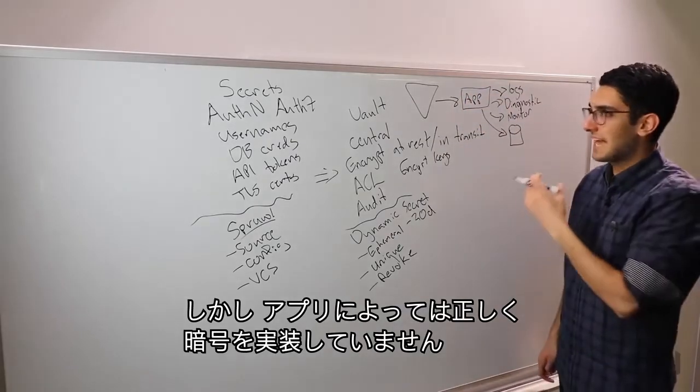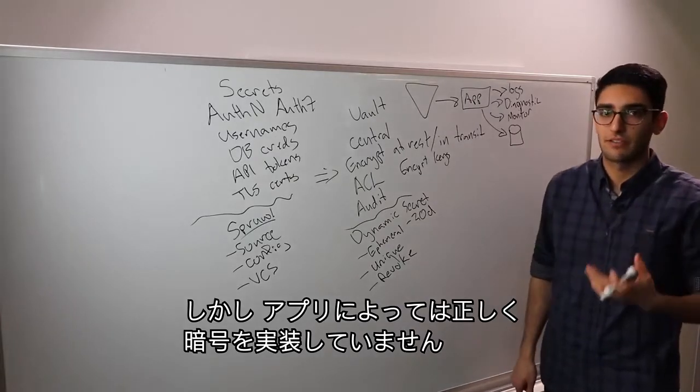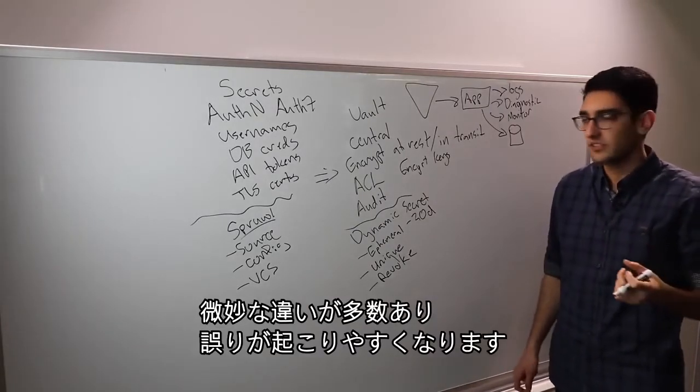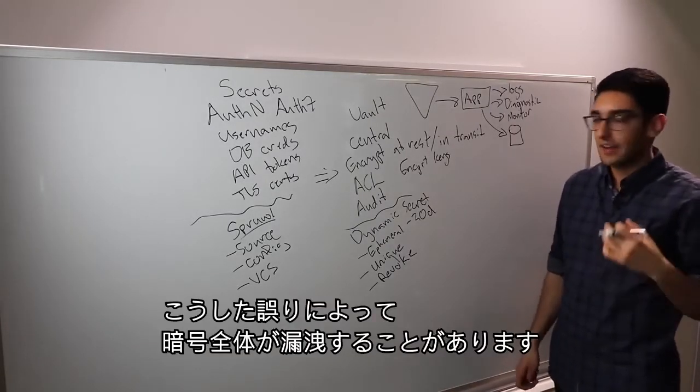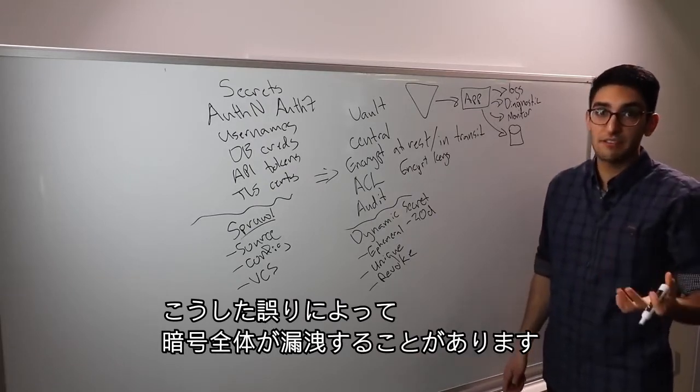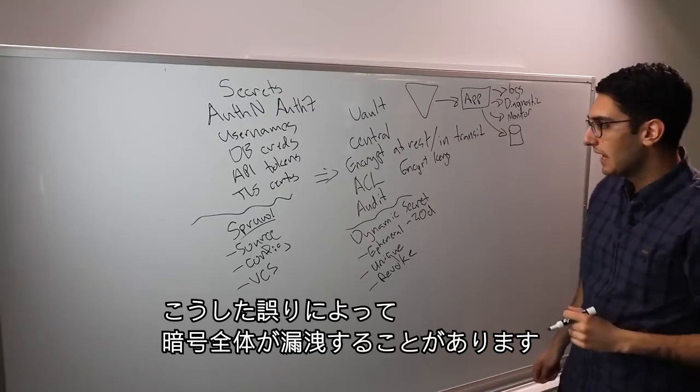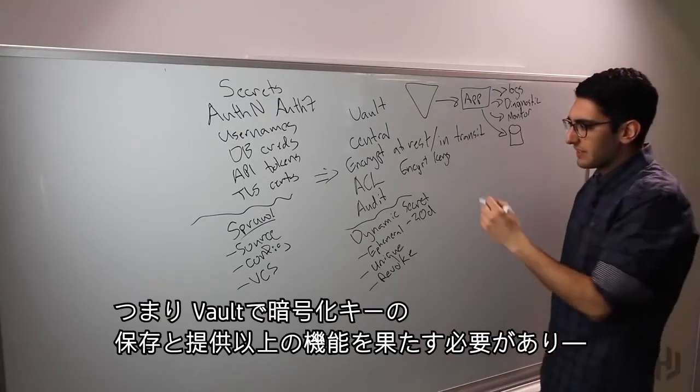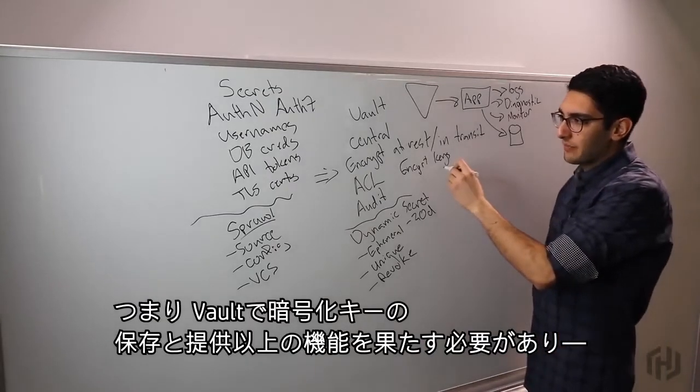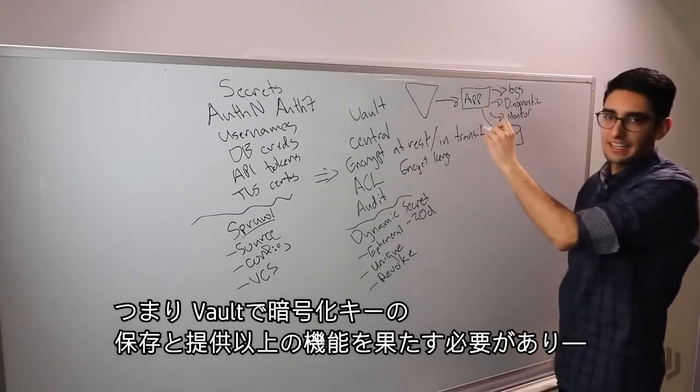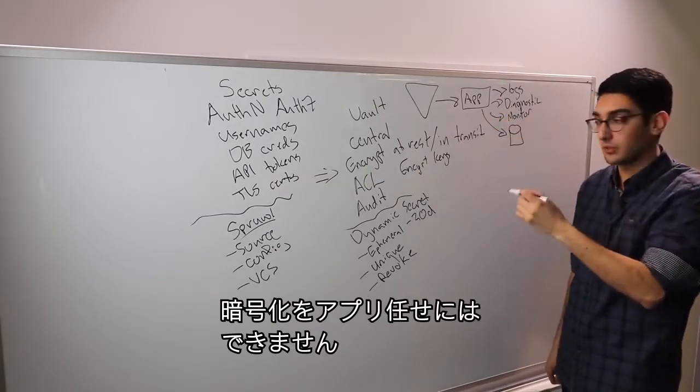What we find though is applications generally don't implement cryptography correctly. There's lots of subtle nuances and it's easy to get wrong. And with these kind of mistakes, oftentimes it compromises the whole cryptography when those mistakes are made. One of the challenges we often look at is how do we get away from Vault just storing an encryption key and handing it to the application and assuming the app will do cryptography right?